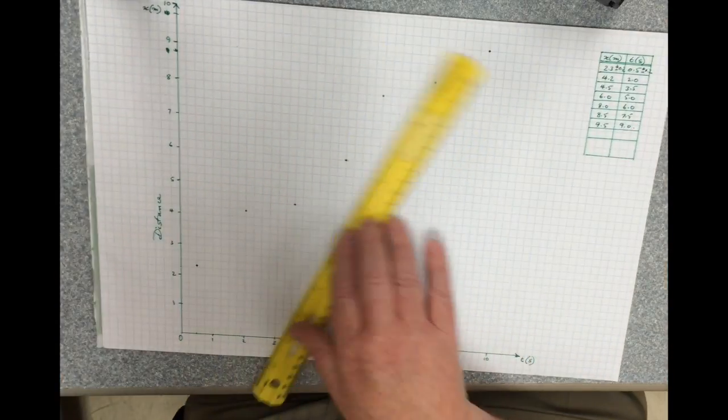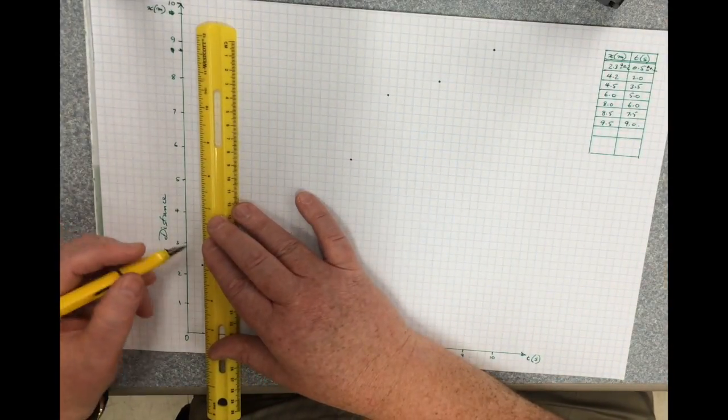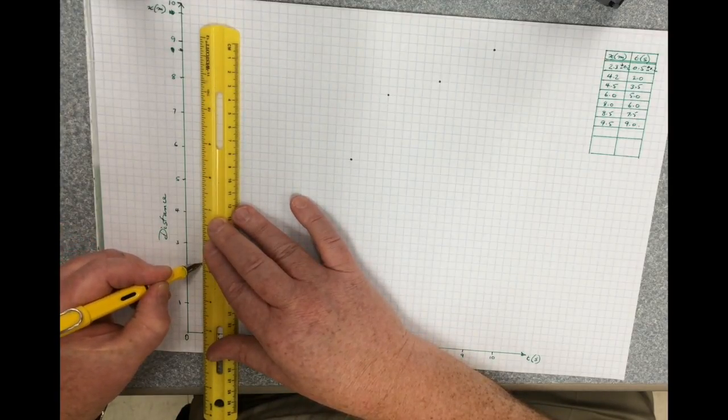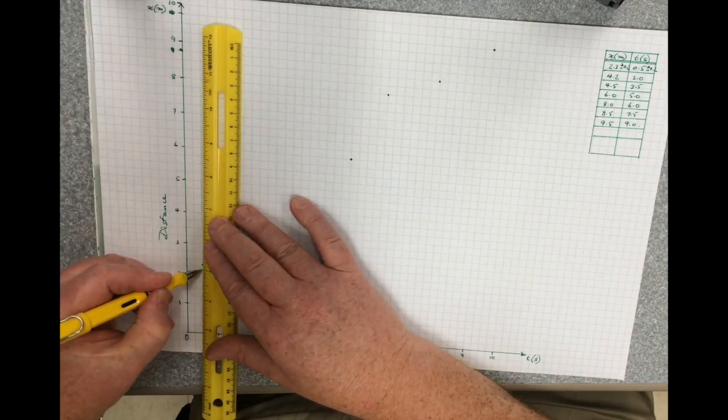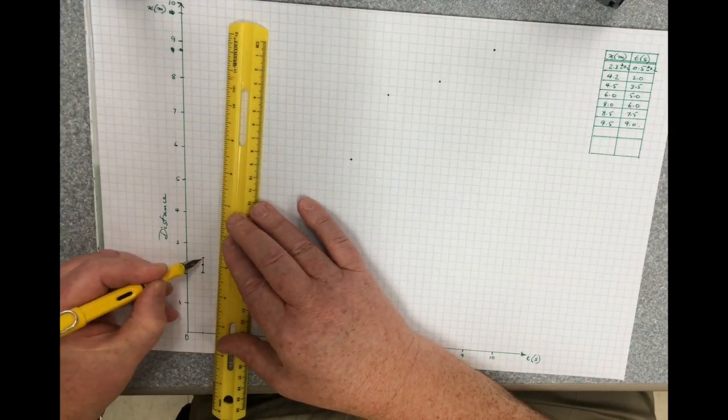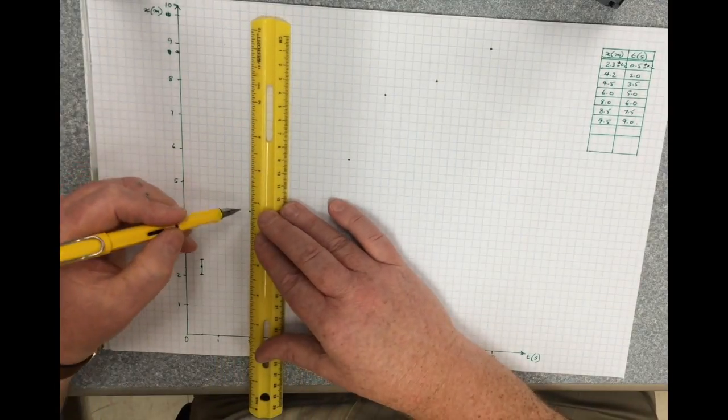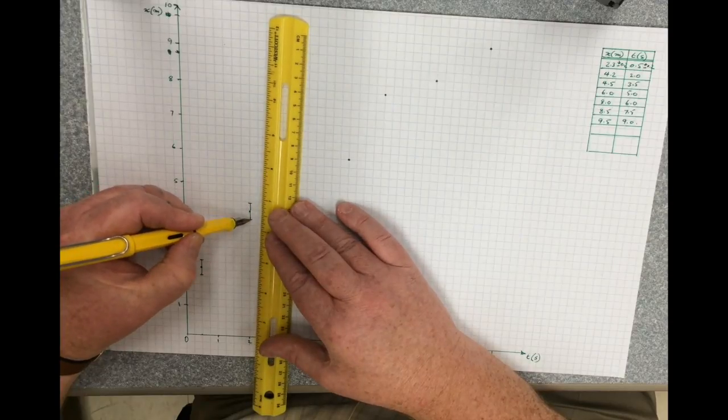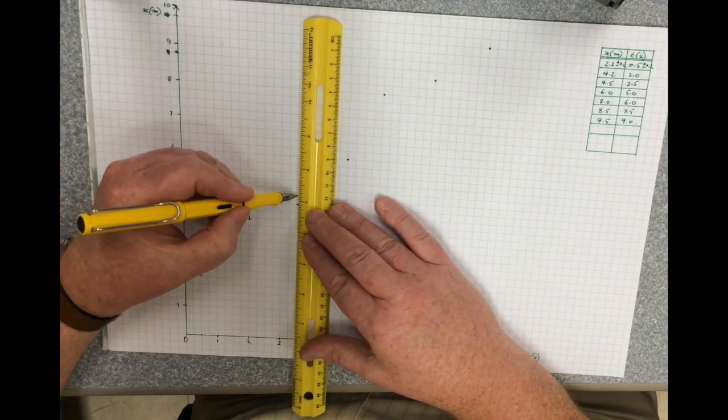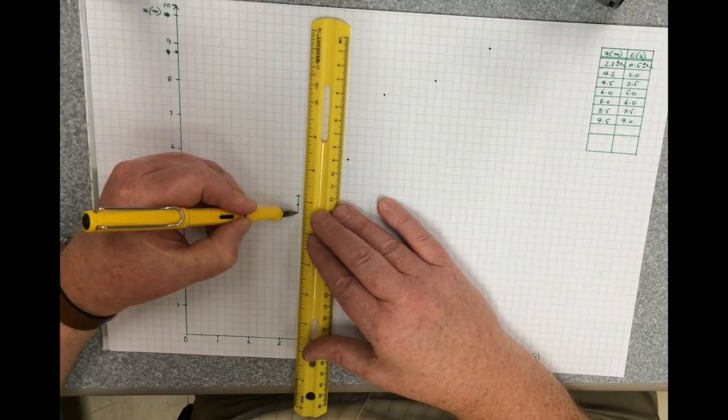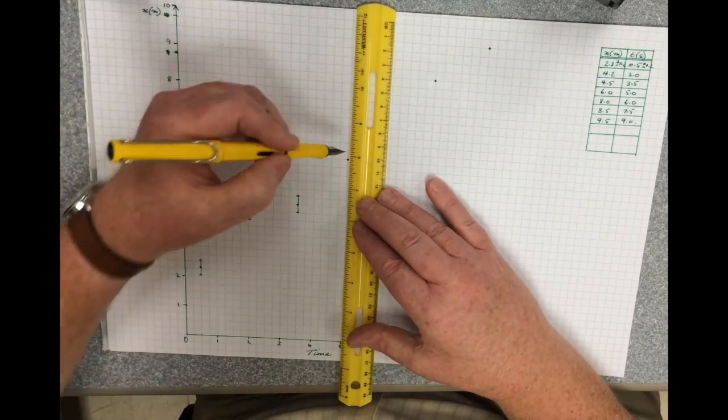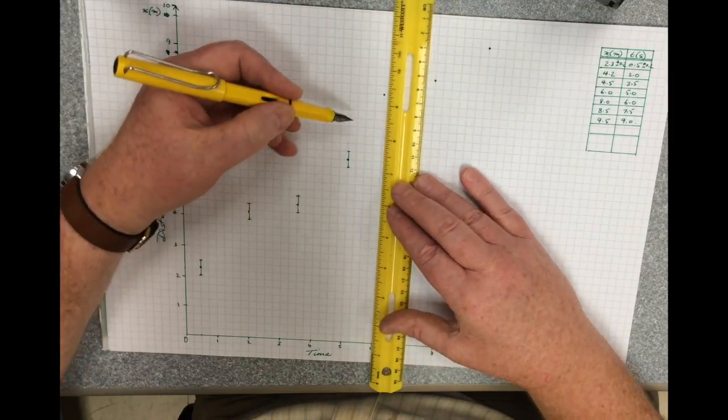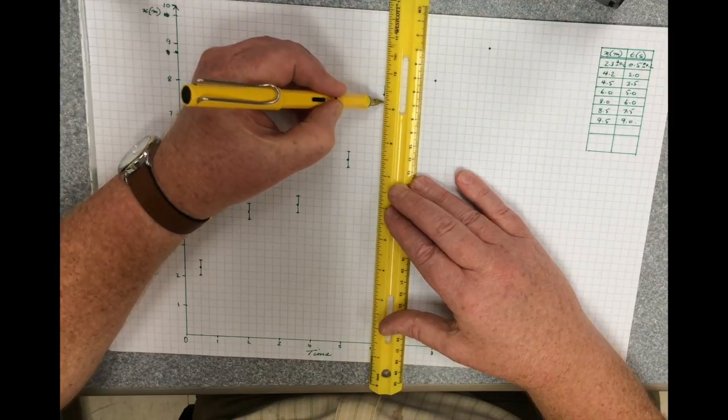I'm going to now draw in the error bars. 0.2 or 0.25, let's say, is one block. I think that's a reasonable number to make this. And I'll make that 0.25 that way, 0.25 that way.